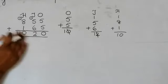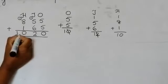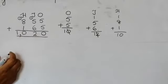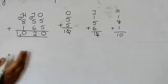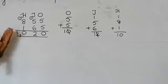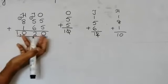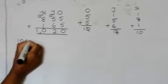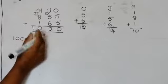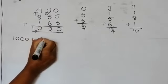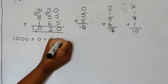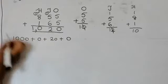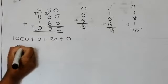Remember one thing: if we have the answer in thousands, you must put a comma after 1000. So 1020. The first step we will separate our numbers: 1000 plus 0 plus 20 plus 0.